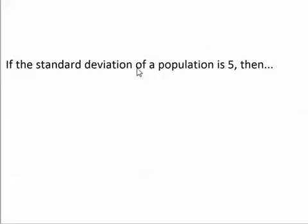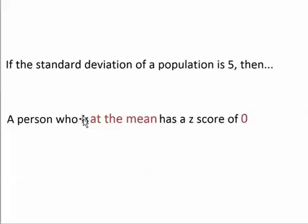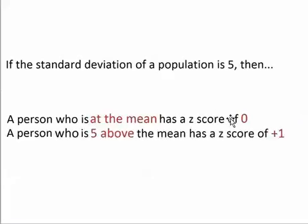Let's think about a population that has a standard deviation of 5. For example, maybe a certain class takes an exam and the standard deviation of their exam scores turns out to be 5. If that's true, then a student in the class who has an exam score right at the mean would have a z-score of 0. A student with an exam score that's 5 above the mean would have a z-score of plus 1, because that student would be one standard deviation above the mean.